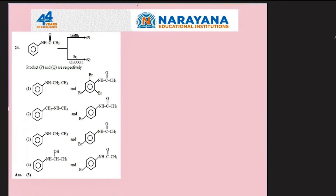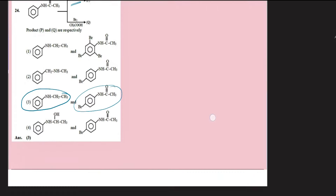A question from organic chemistry involving acetanilide. Acetanilide on reduction with lithium aluminum hydride — amides are reduced to amines — gives a secondary amine. With bromine and acetic acid, it undergoes para-bromination, giving the para-brominated product. The correct answer is the third option. That's it — these were the solutions to memory-based questions of the 6th April paper, shift 1.